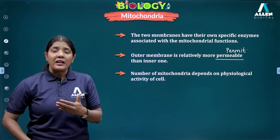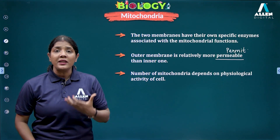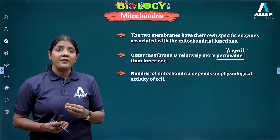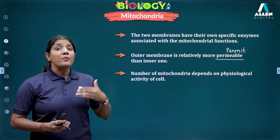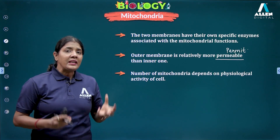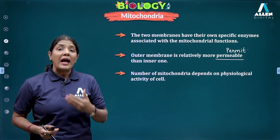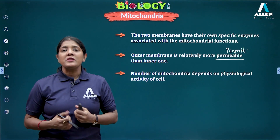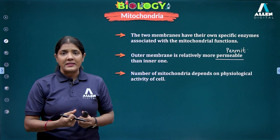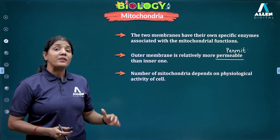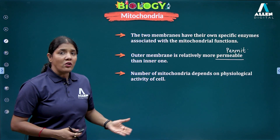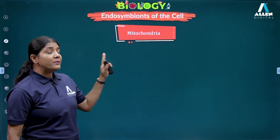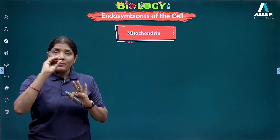The number of mitochondria depends upon the physiological activity of the cell. A cell that is physiologically more active throughout the day will have more mitochondria compared to less active cells. For example, in animals, the liver will have comparatively more mitochondria because it is more metabolically active.